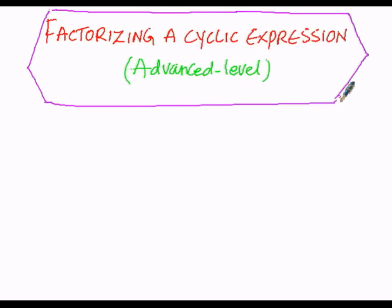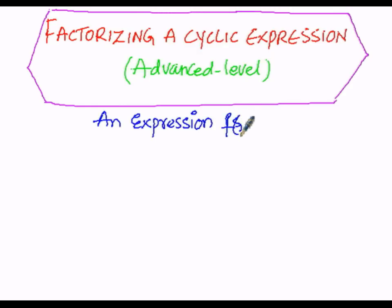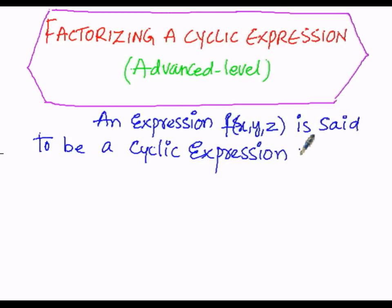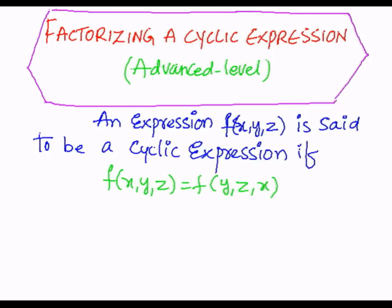An expression f(x, y, z) is said to be a cyclic expression if f(x, y, z) equals f(y, z, x). Then this f(x, y, z) is said to be called a cyclic one.